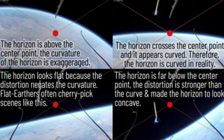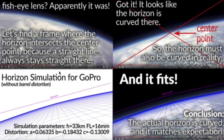Flat earthers have these dramatic memes that make it look like the Earth is flat. They know better than to take an image like this — the obvious distortion — but over here it looks pretty convincing that the Earth is flat. So we can use Walter Bislin's horizon estimator, like I did in one of my other videos, and estimate based on the altitude of the balloon or high-altitude jet and the diameter of the Earth. We can plug in those parameters and see what the curvature in our model should look like without barrel distortion. And lo and behold, it fits — the actual horizon is curved and it matches expectations.